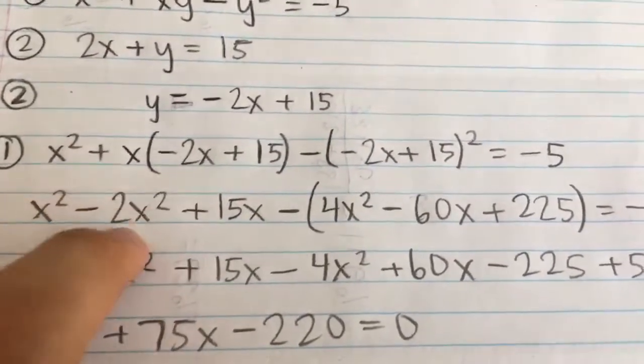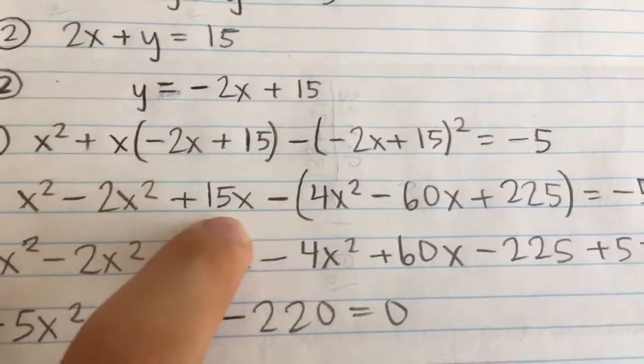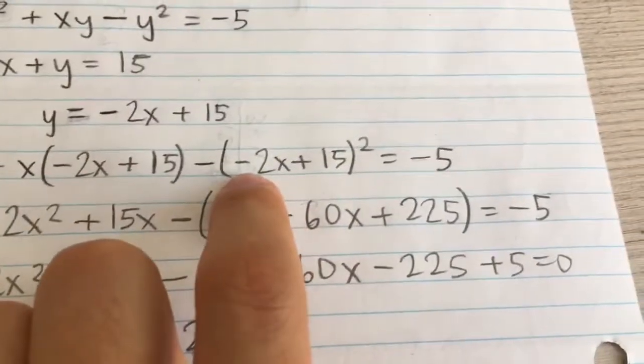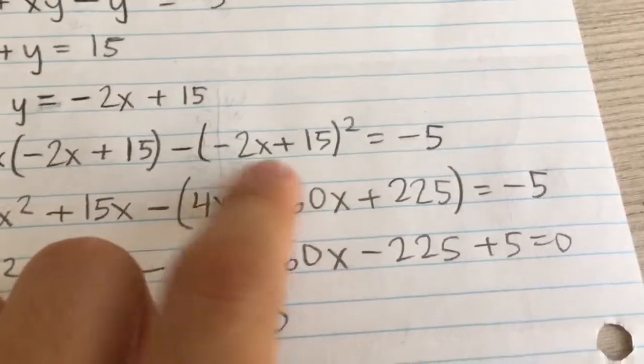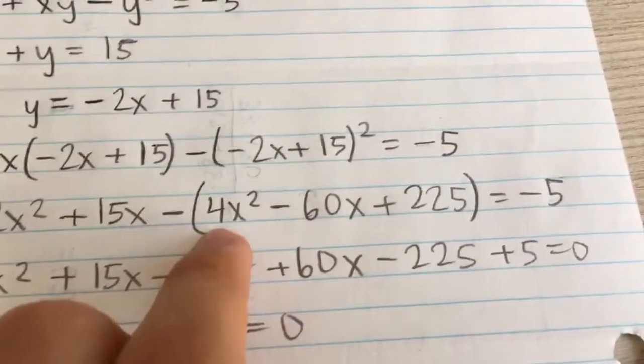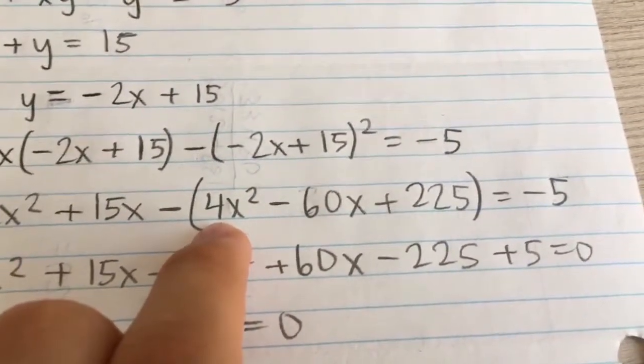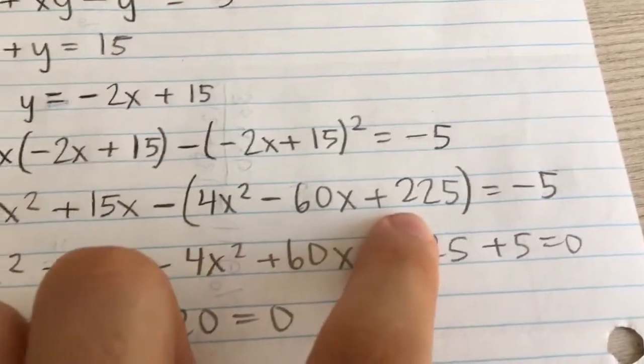Here I'm going to distribute the x, so we have negative 2x squared plus 15x. Here I have negative 2x plus 15 all being squared. So I just did the foiling off to the side. We're going to end up with 4x squared minus 60x plus 225.